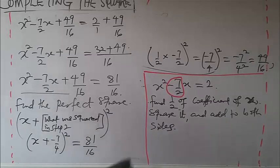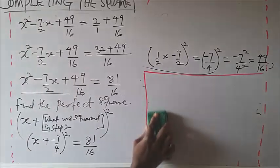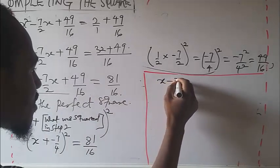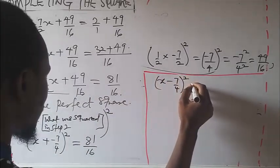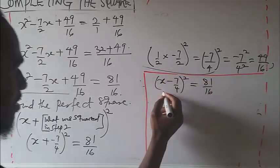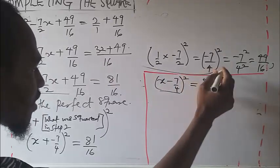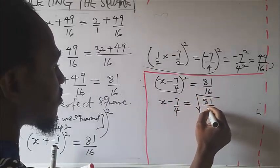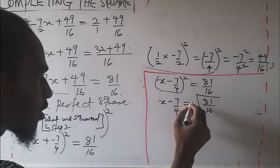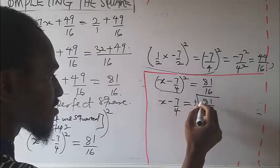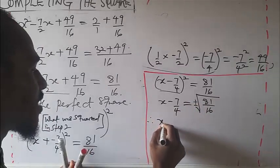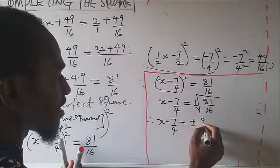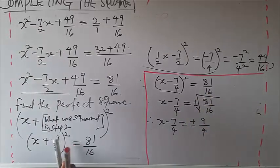So (x − 7/4)² = 81/16. To remove the square, take the square root of both sides. When you see a square root, it means plus or minus. Therefore, x minus 7/4 equals plus or minus — square root of 81 is 9, square root of 16 is 4 — so plus or minus 9/4.